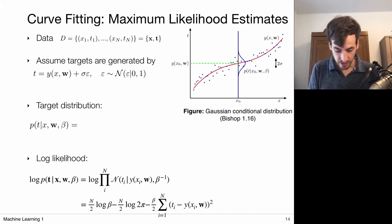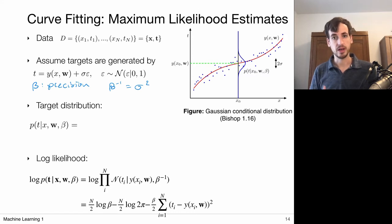We're also going to define a so-called precision parameter. This is called precision, and it is defined as the inverse of the variance. If I have large variance, then I have small precision. If my variance is small, then I have a high precision.